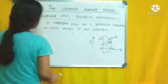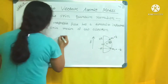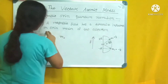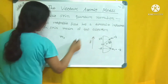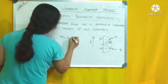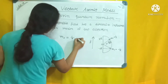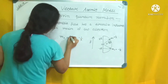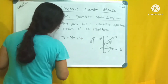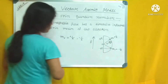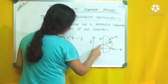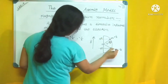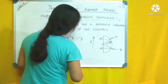Now regarding the magnetic spin quantum number: a magnetic field also has a directive influence on the spin motion of the electron. In a magnetic field B, ms can have two values: +½ and −½. From the diagram, ms = +½ is one orientation and ms = −½ is the other.